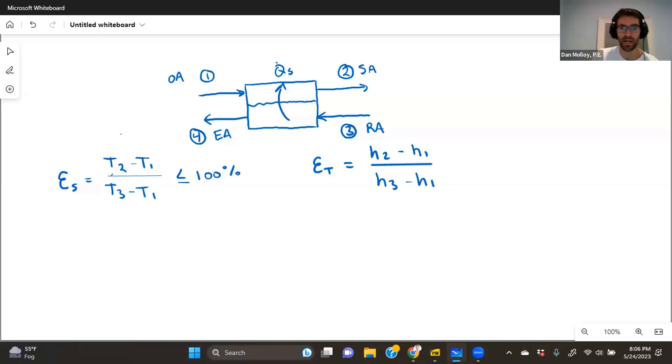And by the way, it's also possible for an energy recovery device, not as common that they'll ask this, but they could certainly ask it, that they may want to know the latent effectiveness. And that would be the same thing with humidity ratios. And the same reasoning applies. So the humidity ratio at 2 minus the humidity ratio at 1 divided by the humidity ratio at 3 minus the humidity ratio at 1.